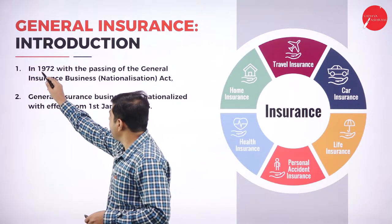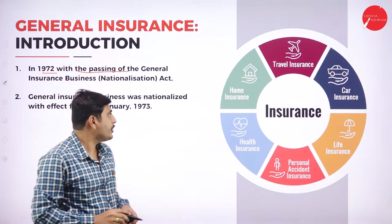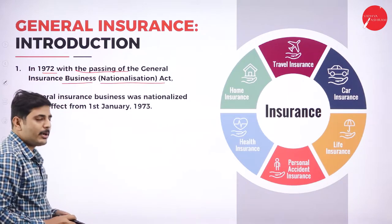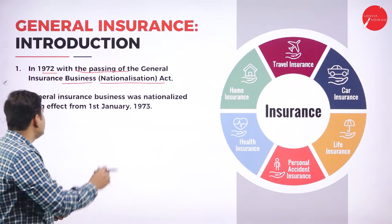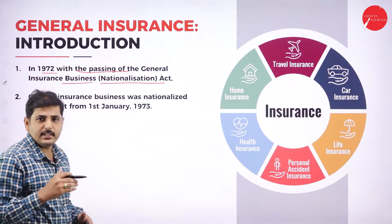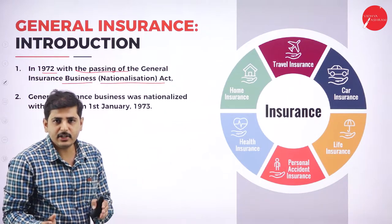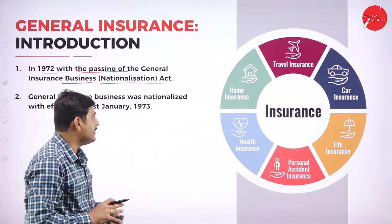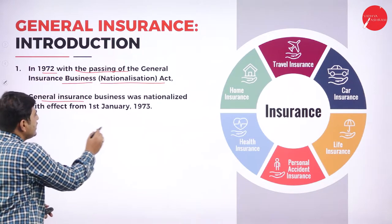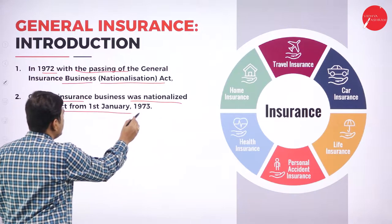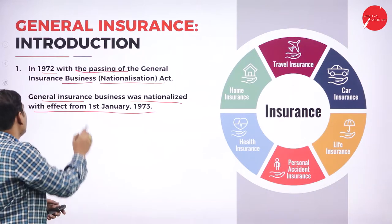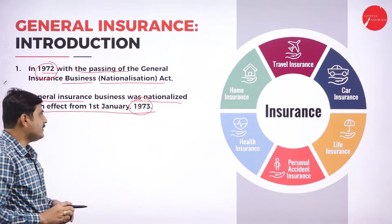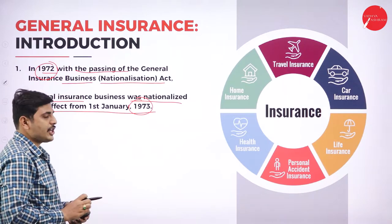In 1972, the Government of India passed an act called the General Insurance Business Nationalization Act. Nationalization means converting private sector to public sector, that is, converting private sector to government sector. The general insurance business was nationalized with effect from 1st January 1973. So the order was passed in 1972 and it came into effect from 1973.